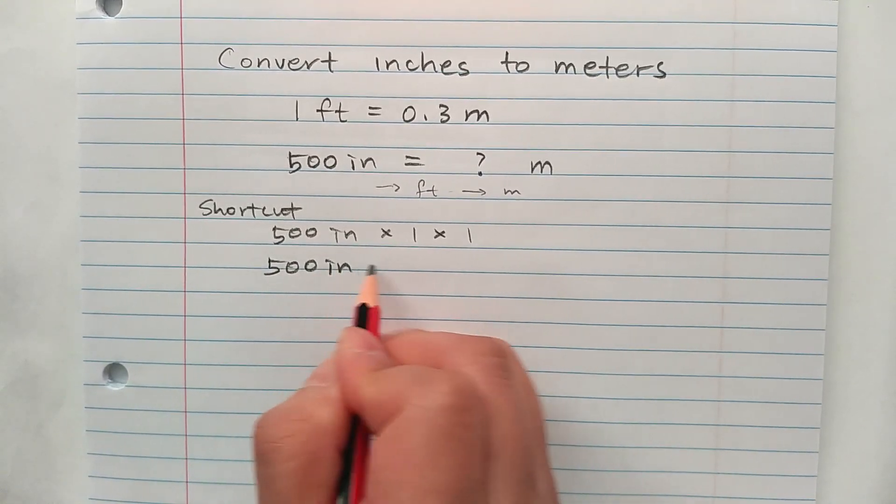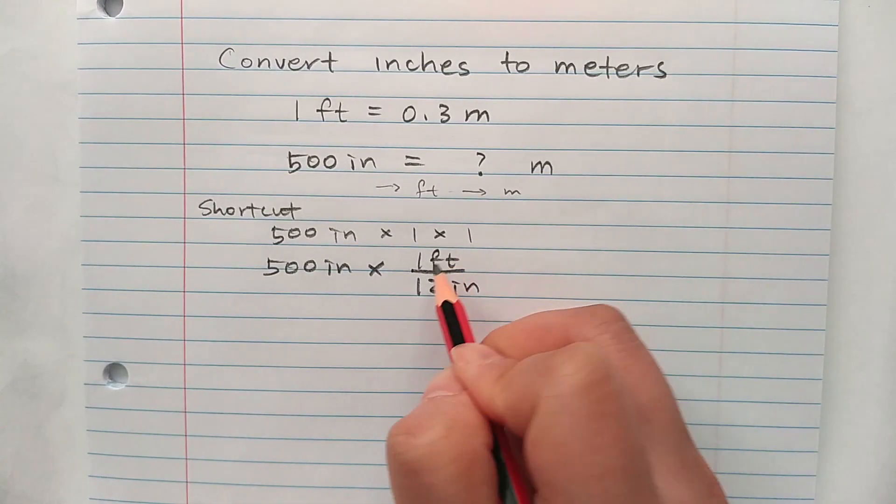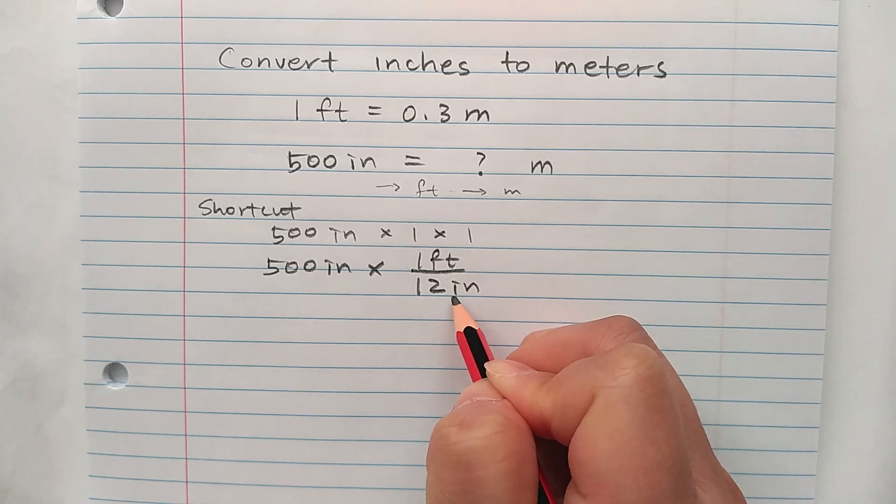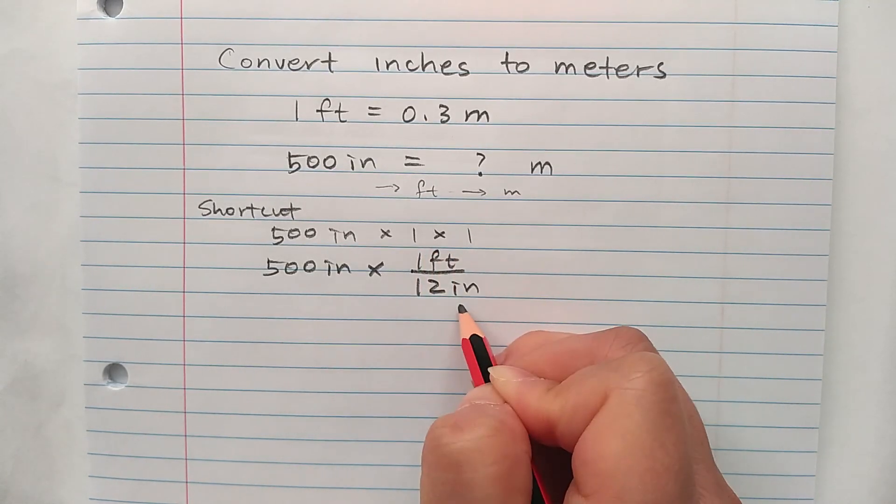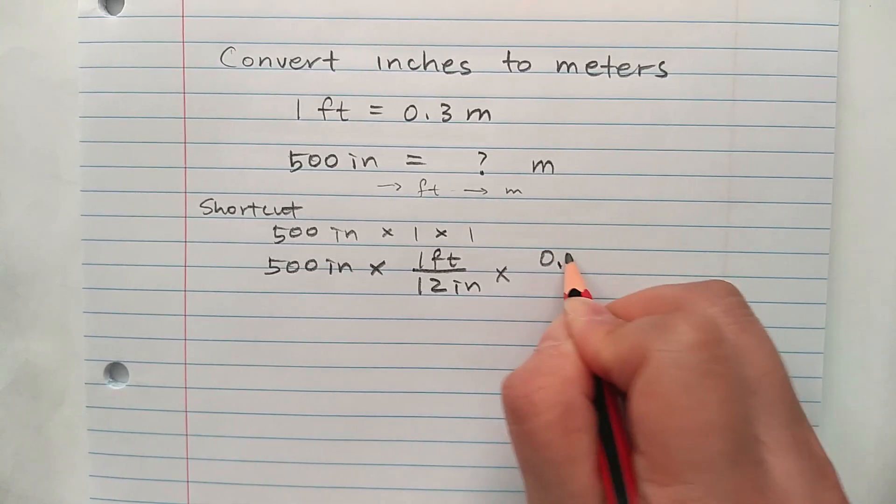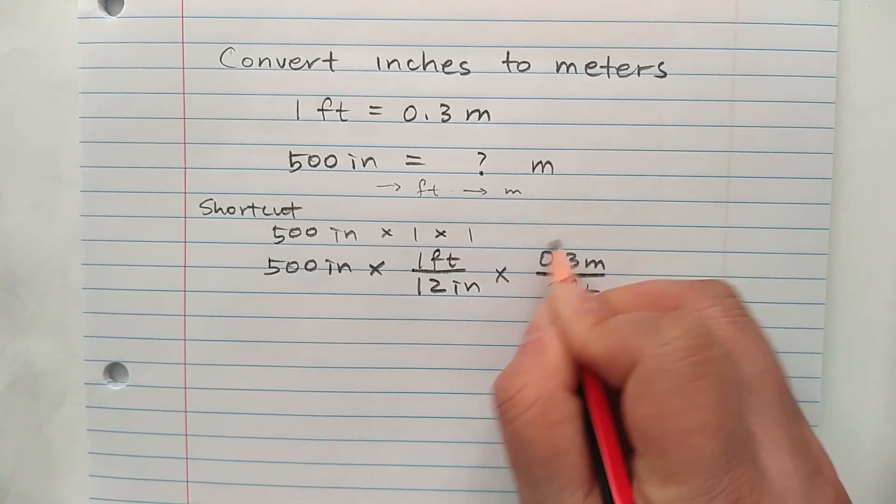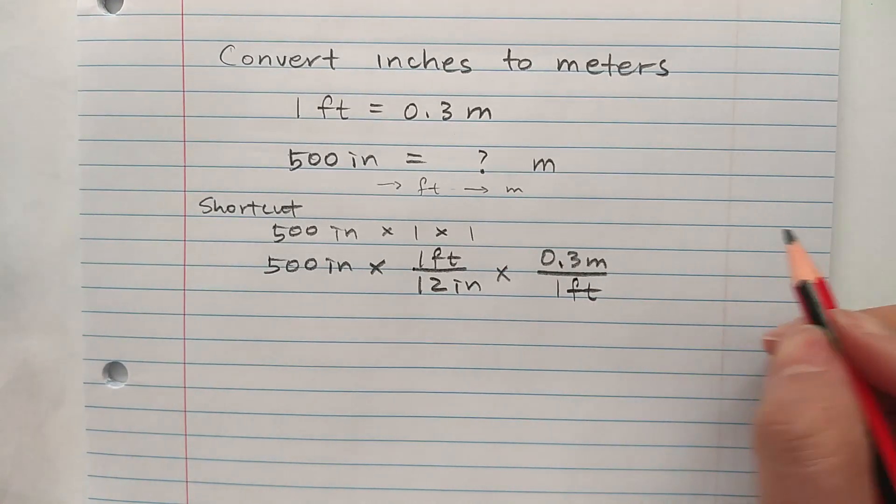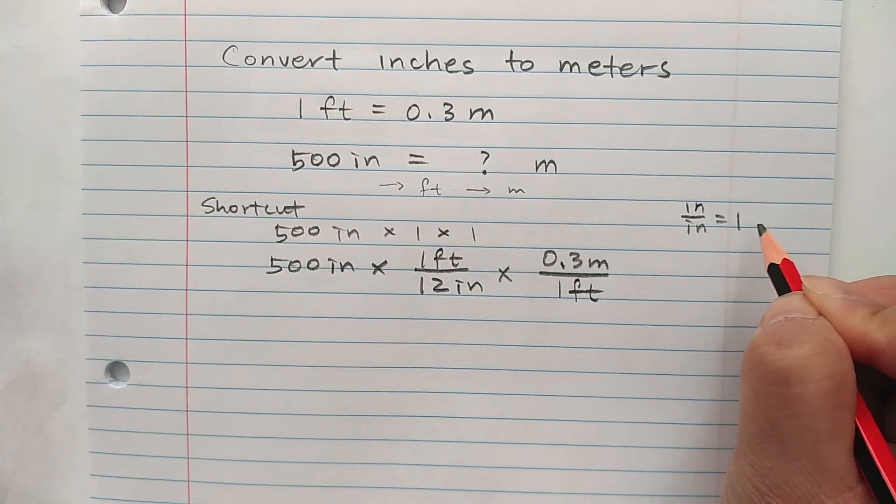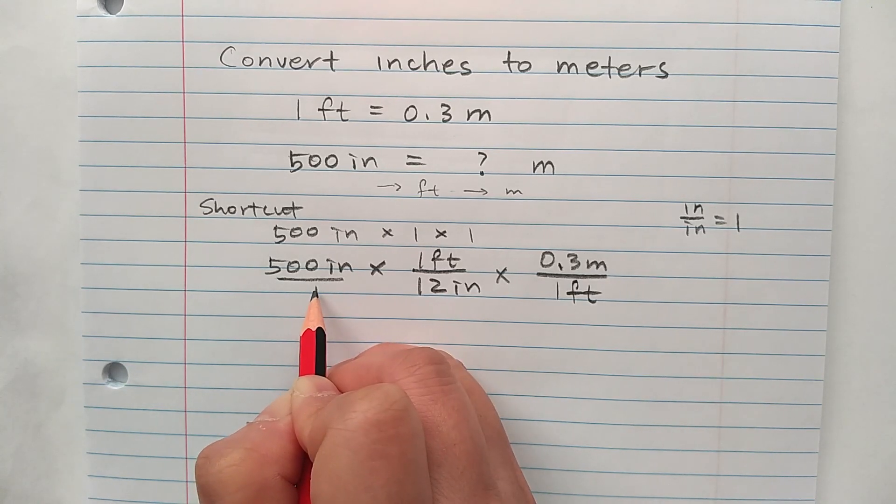500 inches times 1 foot over 12 inches. Is 1 foot equal to 12 inches? Yes. So the numerator and the denominator are equivalent. Then this fraction is equal to 1. And we're going to multiply another one: 0.3 meters are equal to 1 foot. Again, this fraction is equivalent to 1. Now, is 1 inch over 1 inch equal to 1? Yes. So convert 500 inches to a fraction is 500 inches over 1.